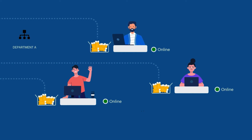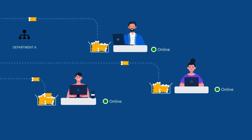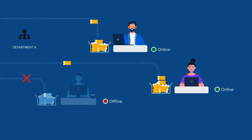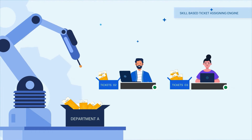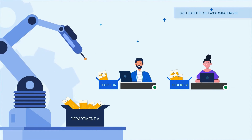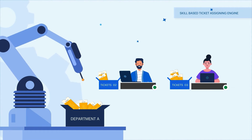Generally, these tickets are mapped to relevant departments and assigned to agents based on agent availability and other assignment algorithms. To resolve tickets faster and better, we can use skill-based assignment.